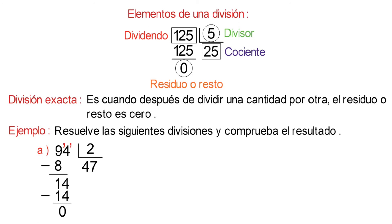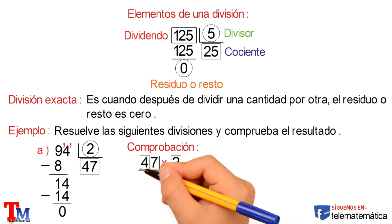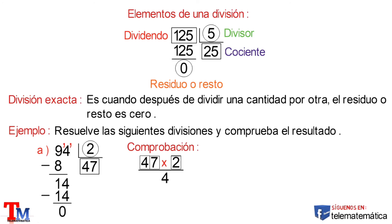Para verificar que el proceso realizado es correcto, realizaremos la comprobación. Para ello, simplemente multiplicamos el cociente y el divisor. 2 por 7 es igual a 14; escribimos el número 4 y llevamos 1. 2 multiplicado por 4 es igual a 8, y 1 que llevamos es igual a 9. Como el resultado de la multiplicación es igual al valor del dividendo, entonces el proceso realizado es correcto.